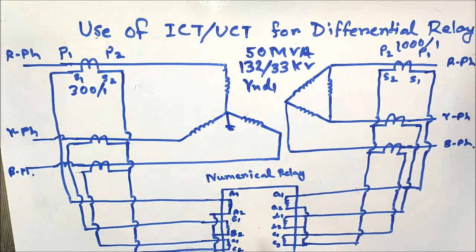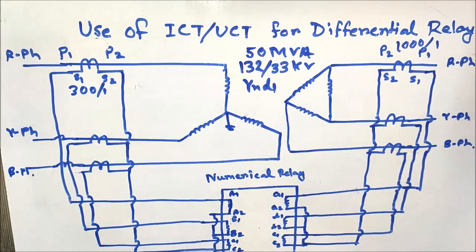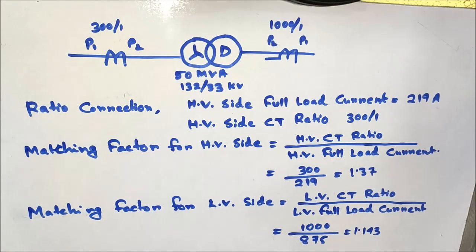In a numerical relay, the matching factor and vector group correction are done automatically when we input the HVCT ratio, LVCT ratio, and the vector group into the numerical relay. We will now discuss the matching factor for HVCT and LVCT ratio. The vector group correction and zero sequence filtering are also automatically done in the numerical relay, but in the case of a static relay these are not done automatically — we have to provide ICT or UCT for these three types of correction.